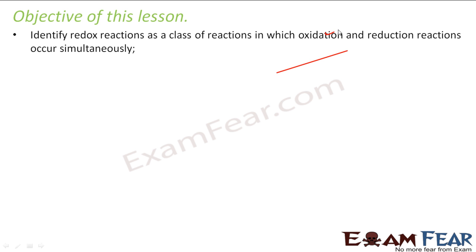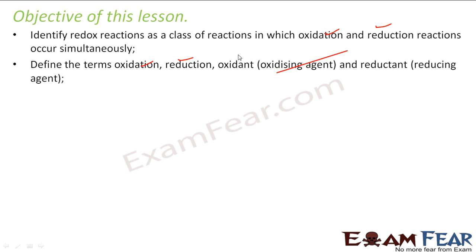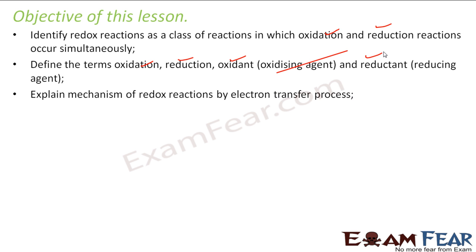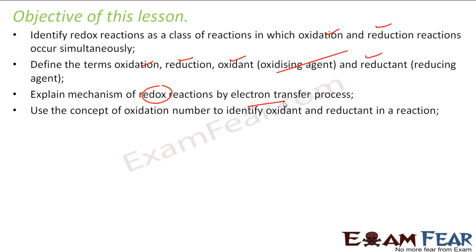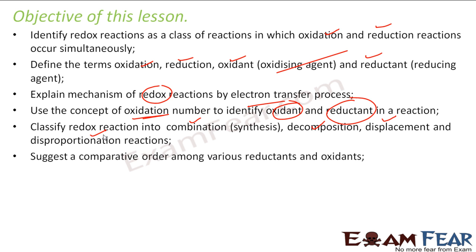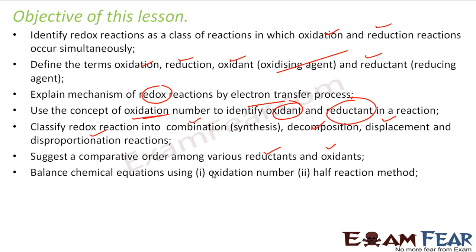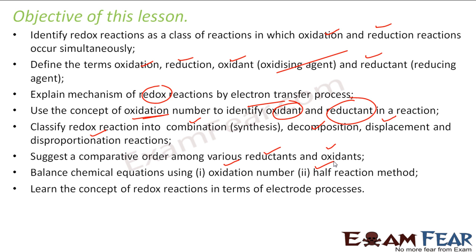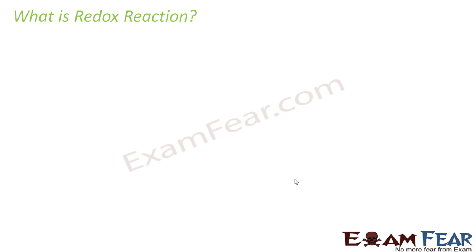We'll talk about oxidation and reduction, define the terms oxidation, reduction, oxidant, and reductant. We'll explain the mechanism for redox reaction in terms of electron transfer process, use the concept of oxidation number to identify oxidant or reductant, and classify redox reactions into combination, decomposition, displacement, and disproportionate reactions. We'll also find comparative orders among reactants and learn how to balance chemical reactions using oxidation number and half-reaction methods, as well as redox reaction in terms of electrode processes.